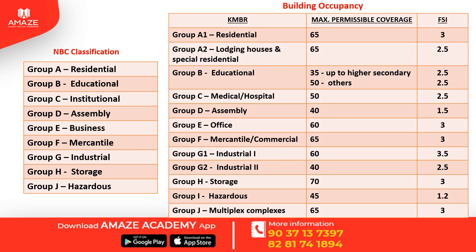In KMBR building classifications: Group A is divided into A1 (normal residential) and A2 (lodging houses and special residential buildings). Group B is educational. Group C is medical/hospital (unlike NBC where Group C institutional includes hospitals, jails, old age homes, and orphanages). Group D assembly is office. Group F is mercantile or commercial. Group G is divided into Industrial 1 and Industrial 2. Group H is storage. Group I is hazardous. Group J is multiplex complexes.